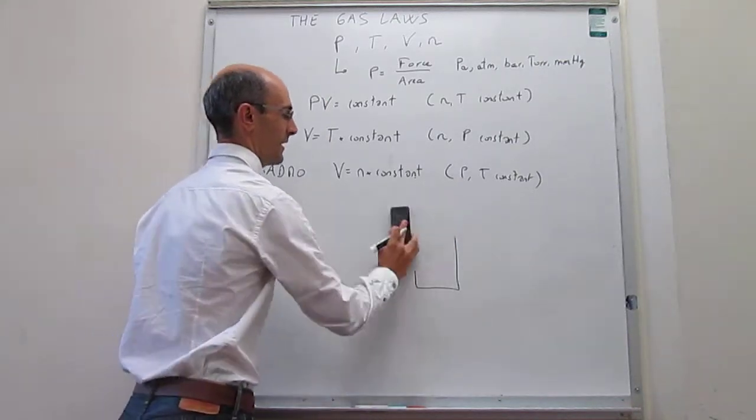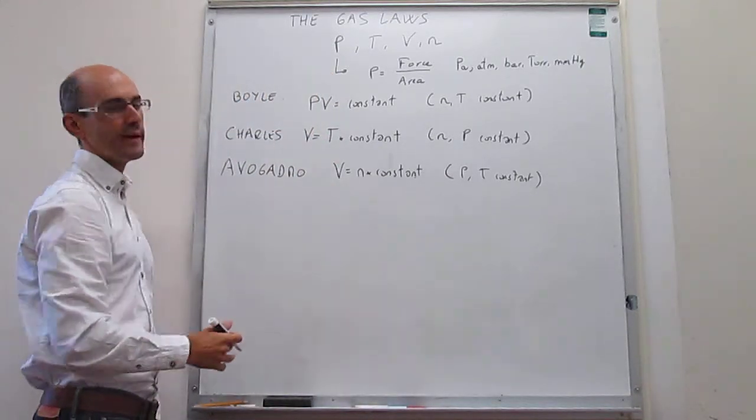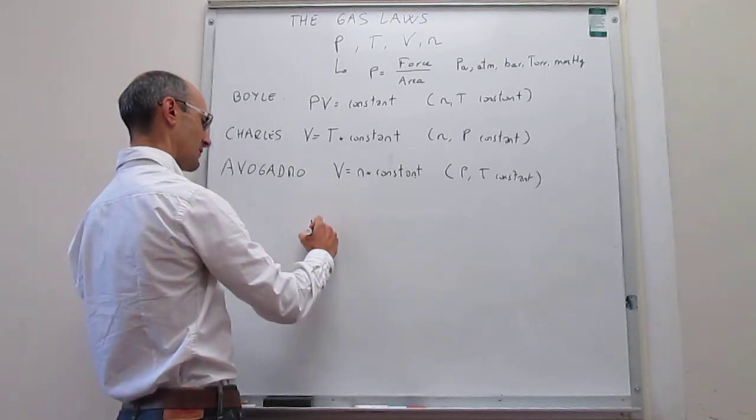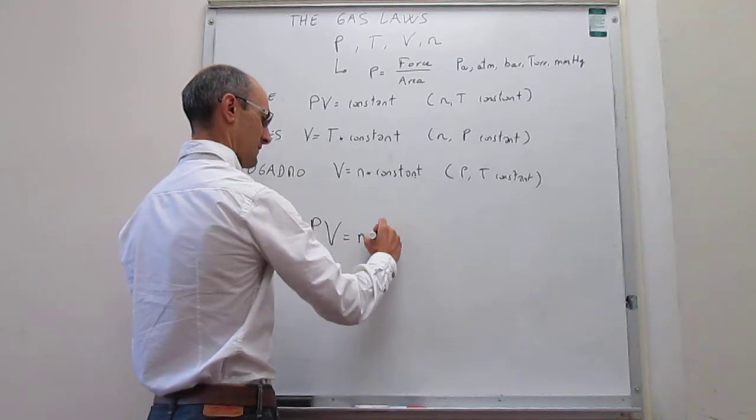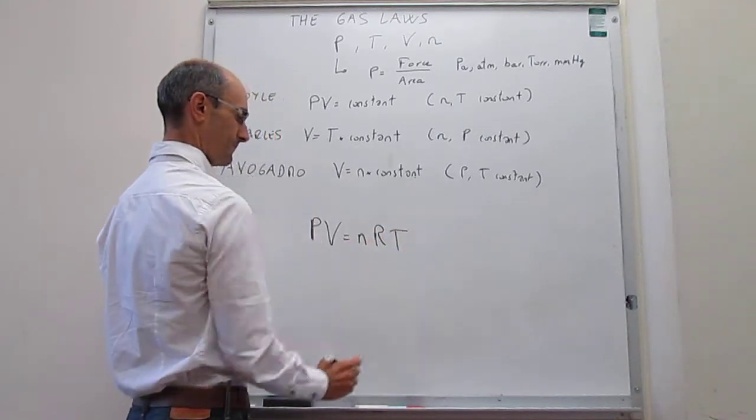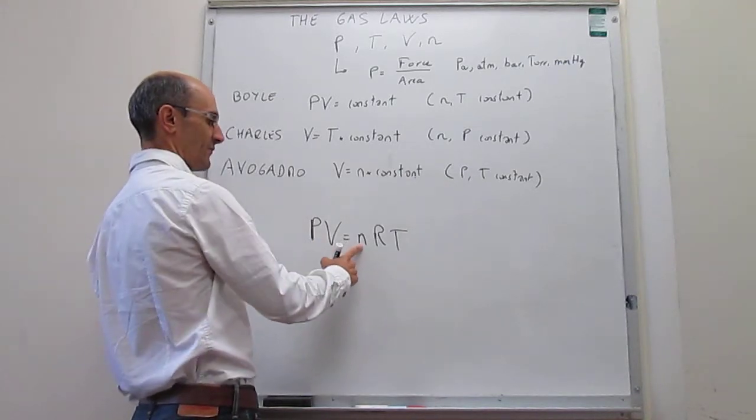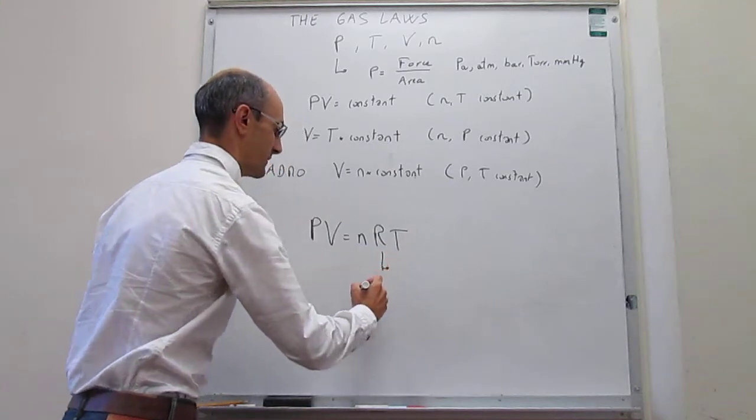Alright, so now we can actually put all of these laws together and come up with a unique law that actually relates the three of them. It's very easy to see that all these can be crystallized in an equation that looks like this: PV equals nRT. Where P is pressure, V is volume, n is the number of moles, T is temperature, and R is something that we call the gas constant.